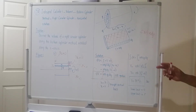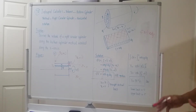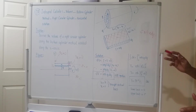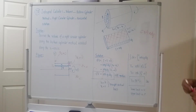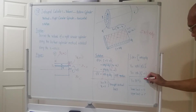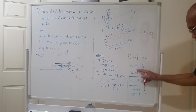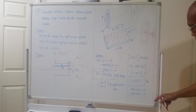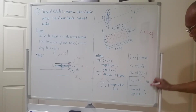What comes out for the volume of the right circular cylinder using the hollow cylinder method — when rotated along the x-axis — is still the same formula: V = πr²h, with lower limit 0 and upper limit r.